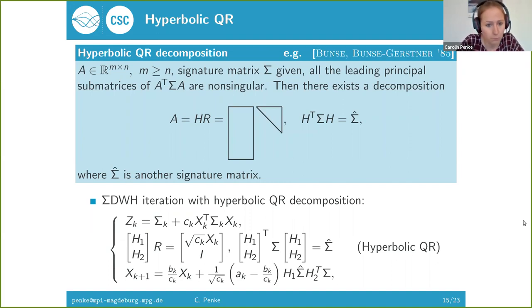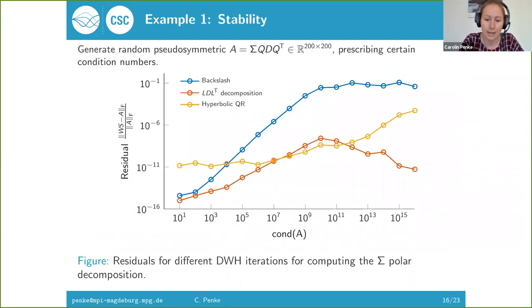If we plug in this H into the theorem we've seen before and use the theorem to rewrite the iteration, we end up with an iteration that looks like this. This would be the analog to the QR based DWH iteration. So we're very hopeful. Does this help? We don't have an inverse anymore. But actually it doesn't really help. Computing the hyperbolic QR decomposition in this way is actually not a very good idea. It doesn't have the same stability properties as computing the orthogonal QR decomposition. In this case better stick with the LDLT decomposition.